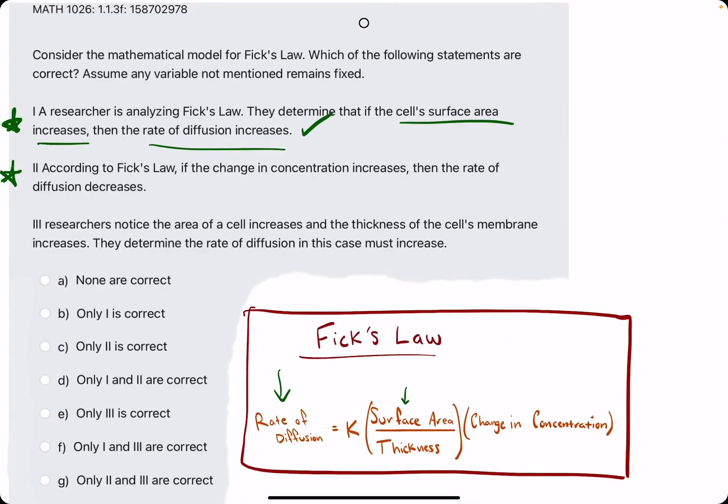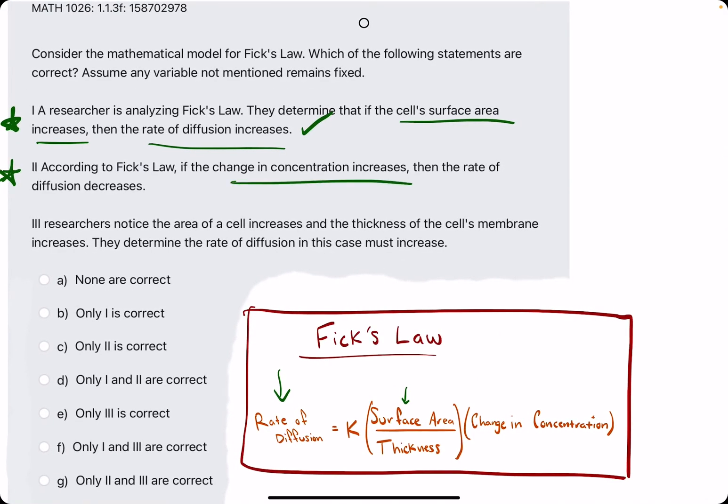Number 2. If the change in concentration, also in the numerator more or less, increases, then the rate of diffusion decreases.